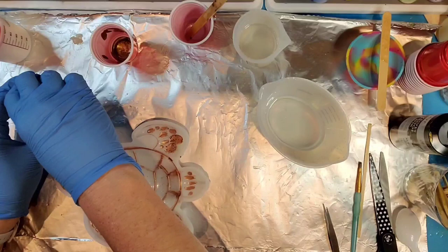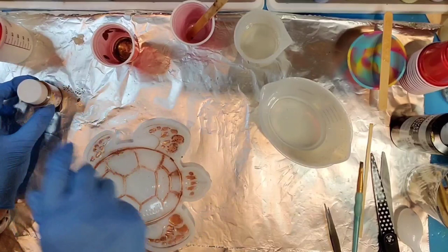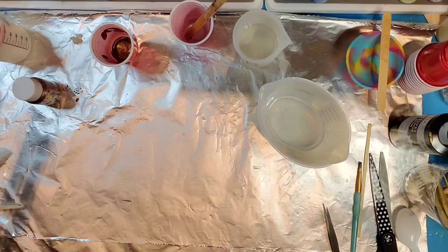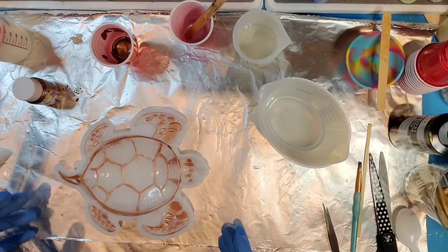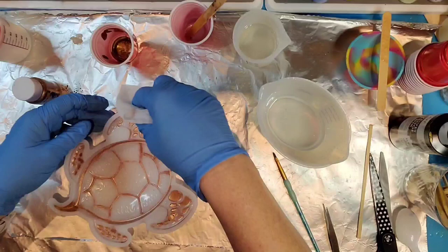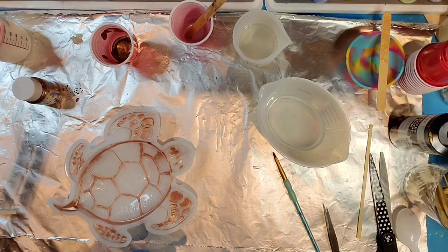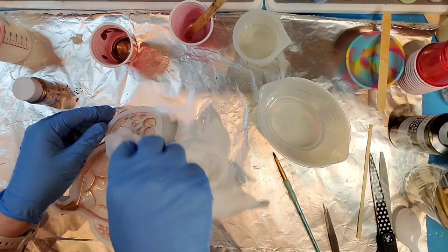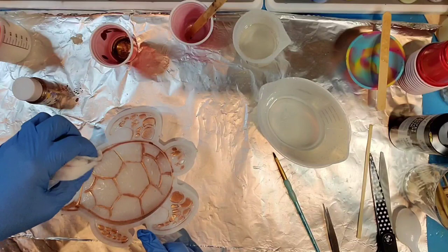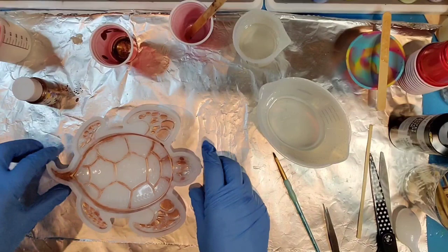I'm going to attempt to get some of this extra mica powder off of my turtle up here. I'm just going to turn it upside down and shake it over my garbage bag. That actually did help quite a bit. So his shell is going to be very pretty, I think.